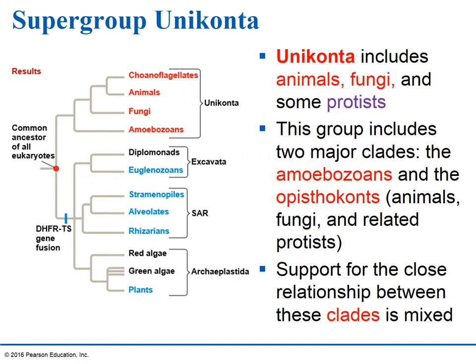The last supergroup is Unikonts. A phylogenetic tree hypothesis of unikonts shows a common ancestor on the far left, with each branching point representing an ancestral point where two groups diverged. The four eukaryotic supergroups are excavata, SAR, and archaeoplastids — we've covered three of the four — and then unikonts. Unikonts consist of animals, fungi, and some protists. The two major clades are the amoebozoans and the opisthokonts — animals, fungi, and related protists. This group includes us. The amoebas in this particular group are not shelled amoebas — you can see cytoplasmic streaming and the formation of pseudopodia. Like others, there are some parasites and pathogens in this group, especially in the amoebas and some fungi.